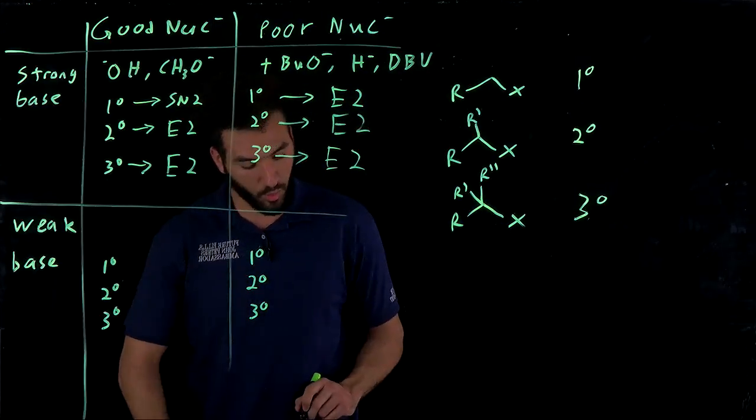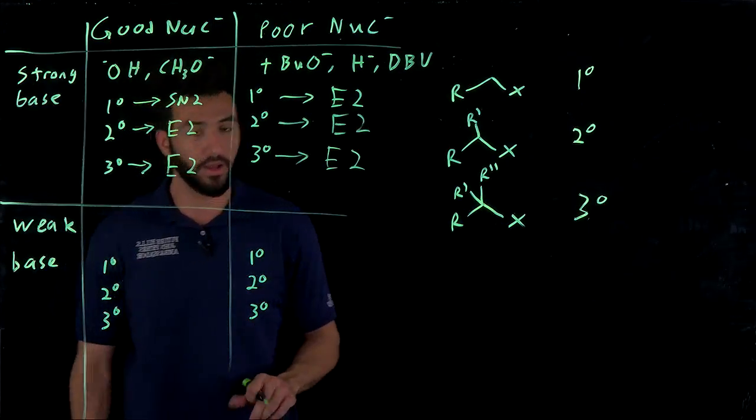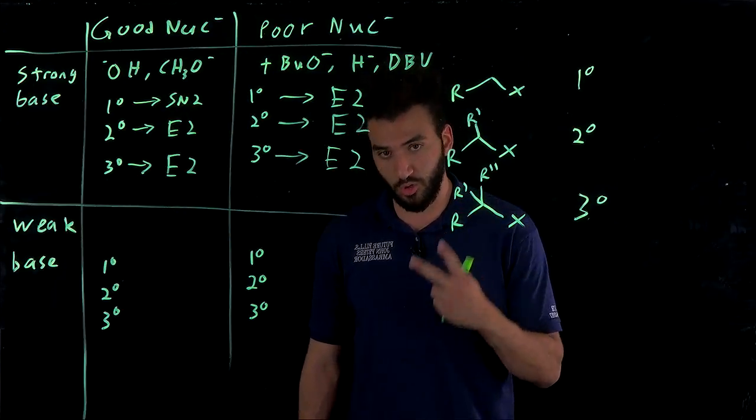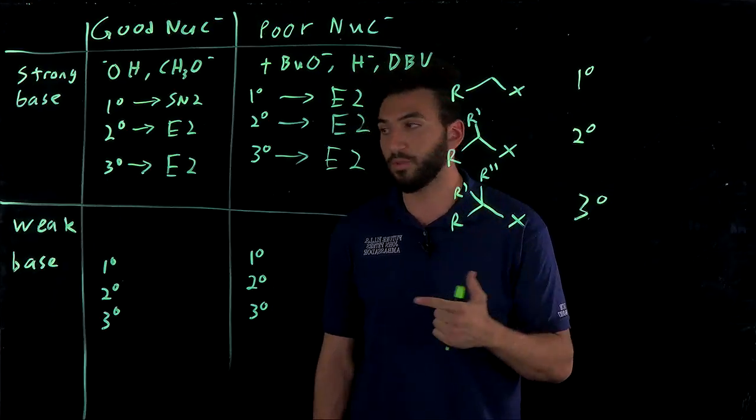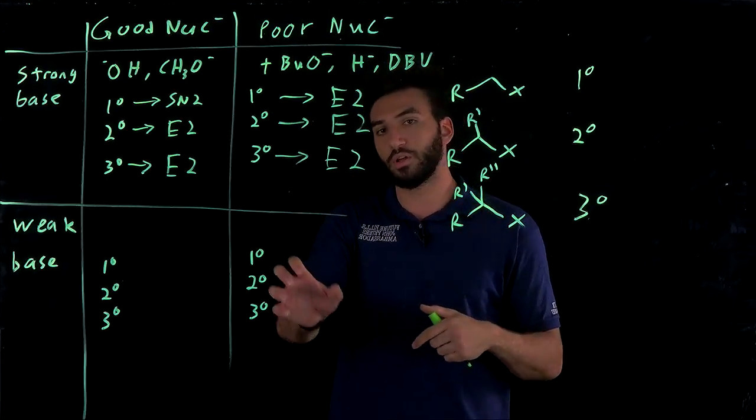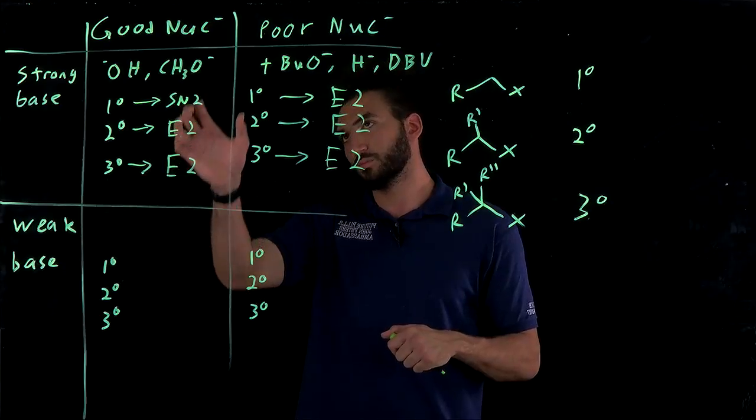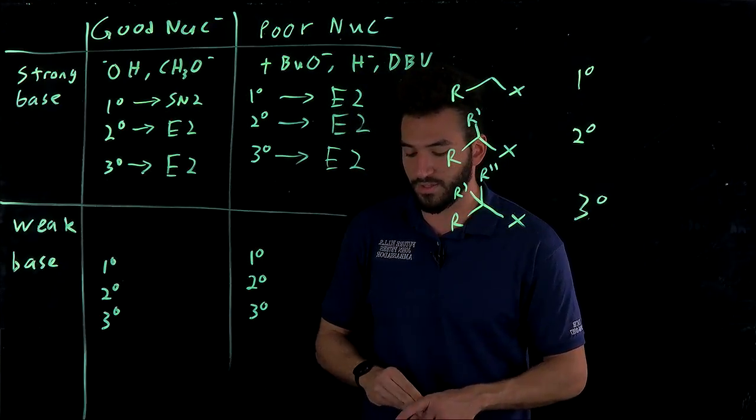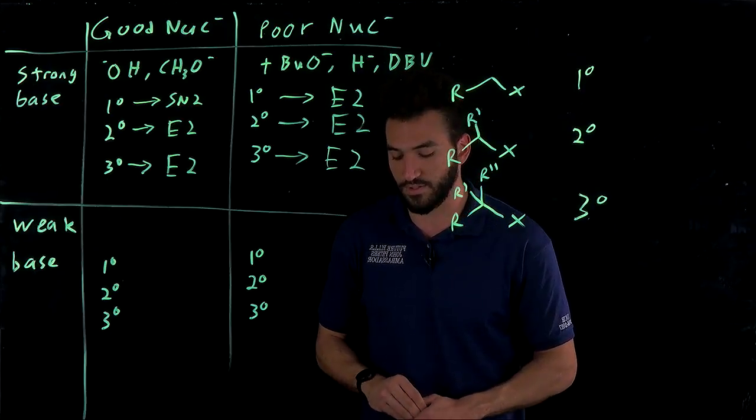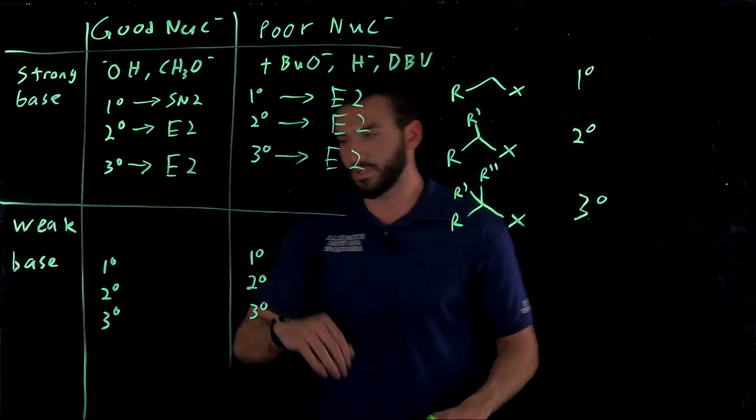So now dealing with weak bases, this is where we sort of have a gray area, because with weak bases you have two competitors now. SN1 and E1, because both of those use poor nucleophiles. And good nucleophiles for weak bases will fall into SN2 and SN1. So let's take a look at that.